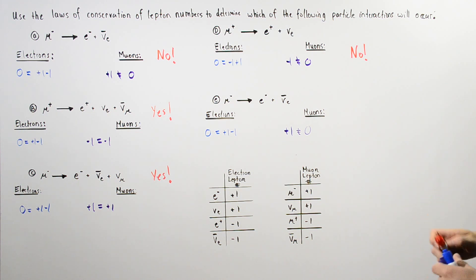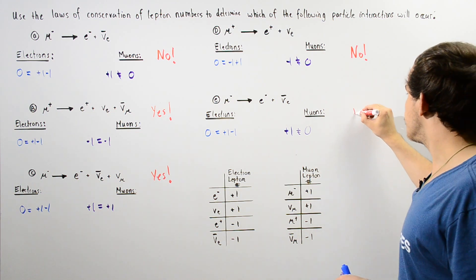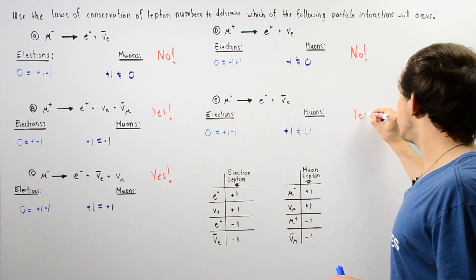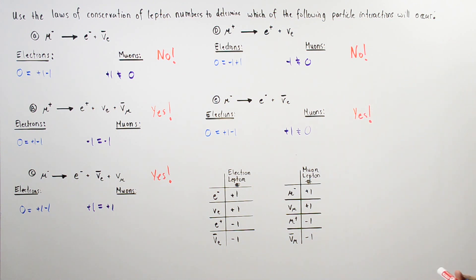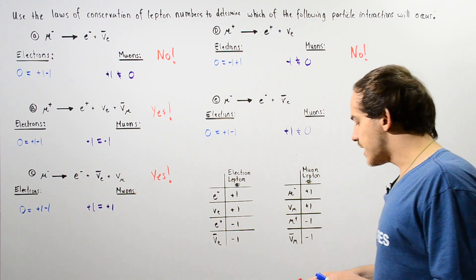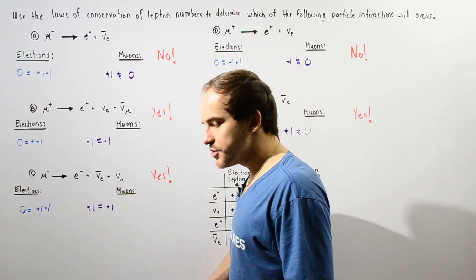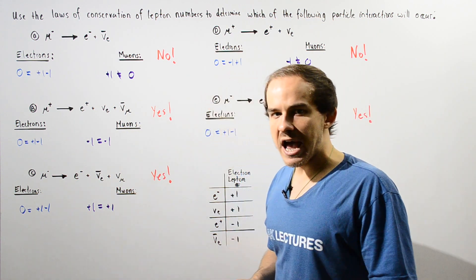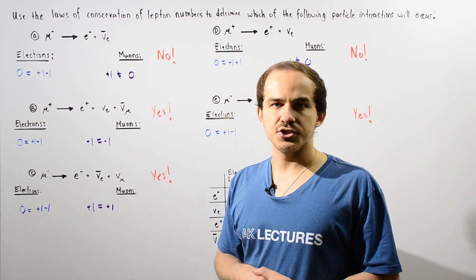Only two out of our five reactions actually take place. We were able to use the laws of conservation for lepton numbers to determine which of these reactions actually occur in nature.